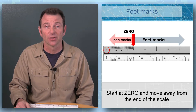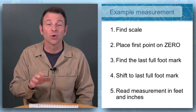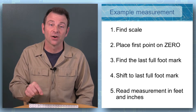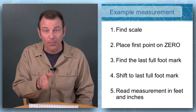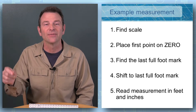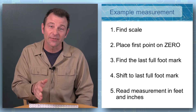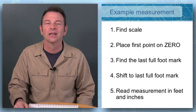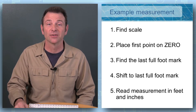Looking at any one of these scales, they all share something in common: you'll start with a zero mark, work one way for your feet, and the other way for your inch marks. To make a measurement with our scale, we always follow a certain series of steps: first, identify and find your scale edge on the tool; second, find your zero and place it on the first point you want to measure; then find the last full foot mark near your second point; shift that last full foot mark over; then measure for your feet and inches.